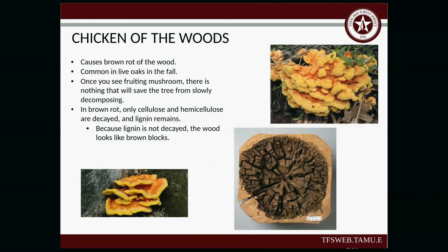Chicken of the woods: I've heard this is edible and tastes like chicken, but I'm not going to try it. It causes brown rot of the wood and is very common in live oaks in the fall. Once you see the fruiting mushroom, there's really nothing you can do to save the tree — once you see fungus on a tree, you're probably not going to be able to save it. With brown rot, only the cellulose and hemicellulose are decayed but the lignin remains, causing that blocky, cube-like pattern you see in the photo.